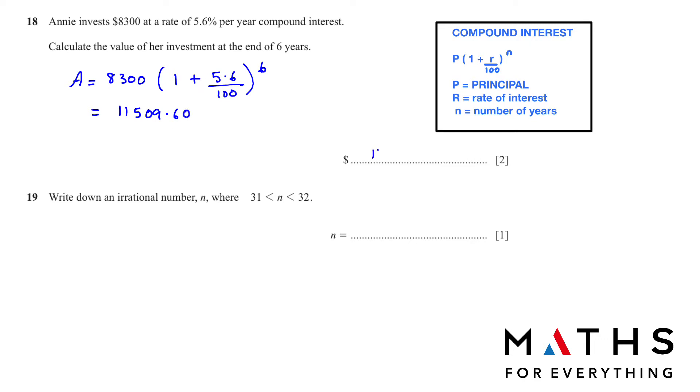Next, write down an irrational number where the number is between 31 and 32. One way to solve question number 19 is we take the numbers that are there and square them. So you have 31 squared and 32 squared. 31 squared is 961 and 32 squared is 1024.